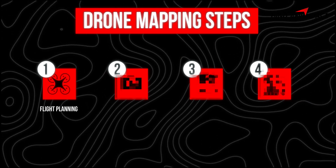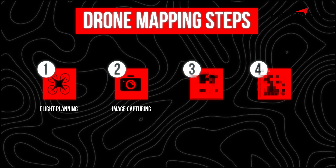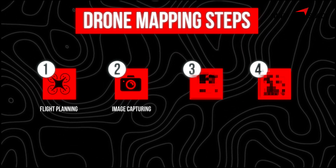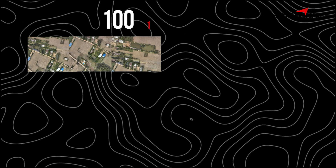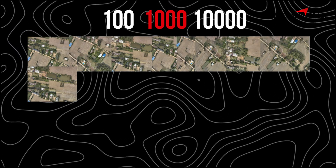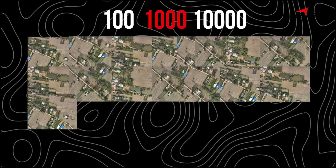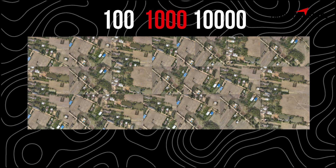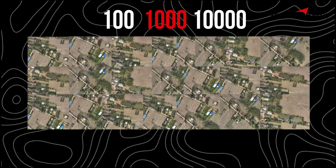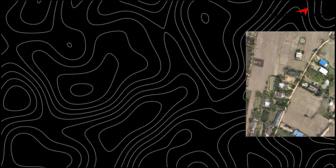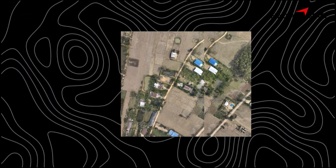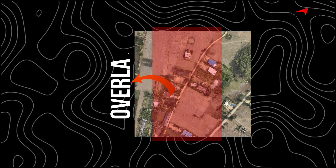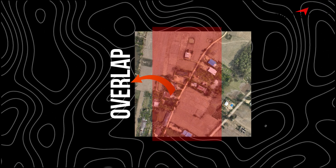Step 2: Image Capturing. As the drone flies, it takes hundreds or even thousands of overlapping images. This overlap is crucial for creating accurate maps and 3D models.